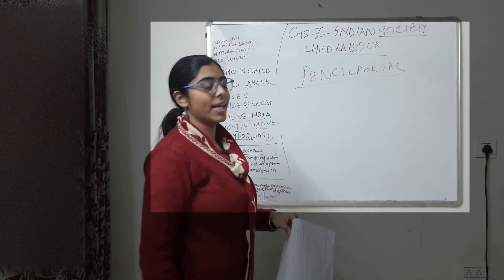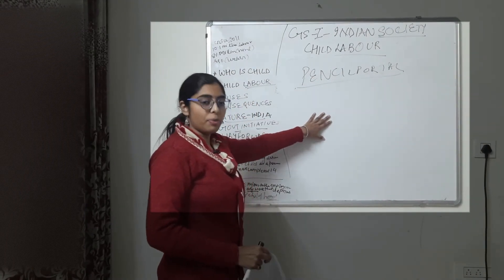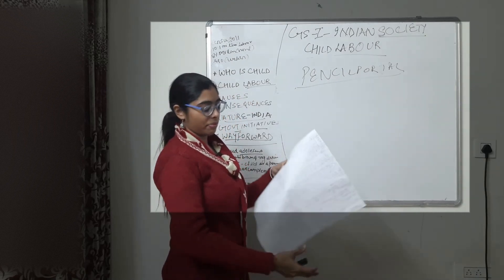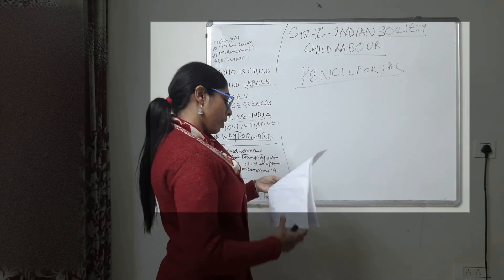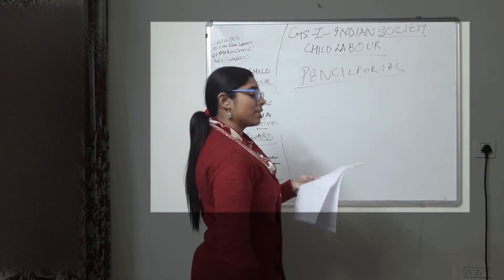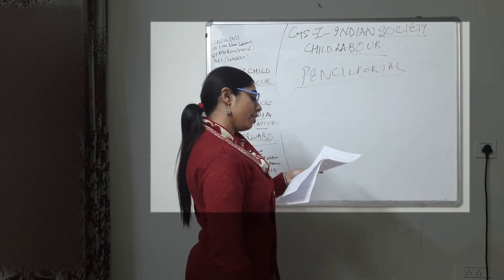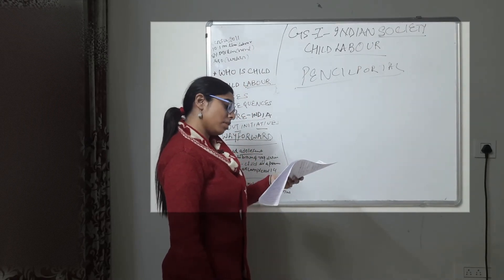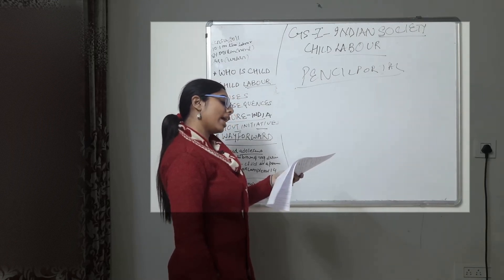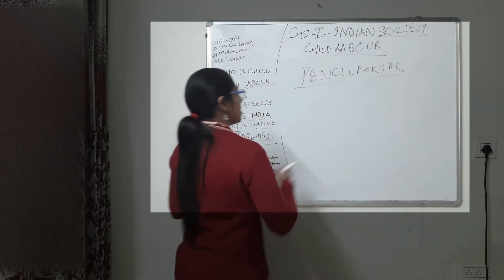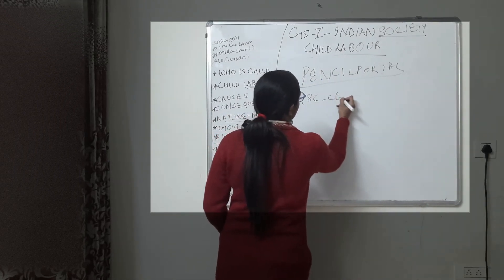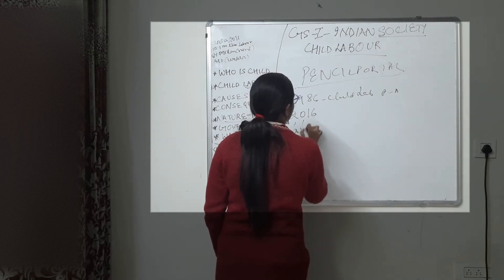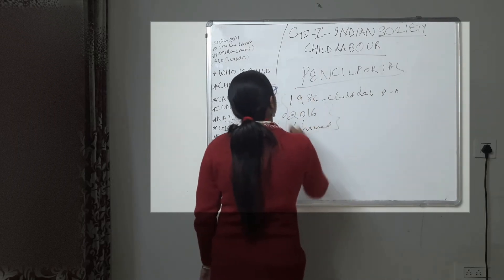Several acts have been passed. The Child Labour Prohibition and Regulation Act of 1986 was a landmark legislation. This was then amended in 2016 and 2017. If you want a detailed video on the legal provisions of these acts, let me know in the comment section.